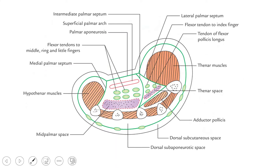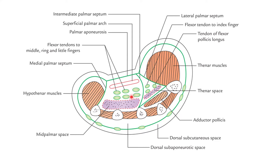Moving on to the boundaries of the mid palmar space: the mid palmar space lies deep to the palmar aponeurosis. It is related anteriorly to the palmar aponeurosis. It is also related to the long flexor tendons of the second, third, and fourth digit along with the lumbricals which lie in relation to the flexor tendon.